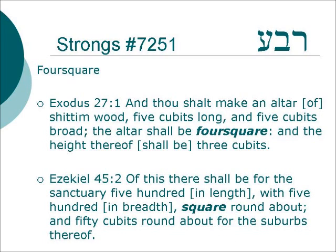Behind the idea of Arba is the root word Reva, which has everything to do with being four. We see it used as four square. Exodus 27:1 — And thou shalt make an altar of Shittim wood, five cubits long and five cubits broad. The altar shall be four square — in other words, what we would just call square. King James calls it four square, and the height thereof shall be three cubits.